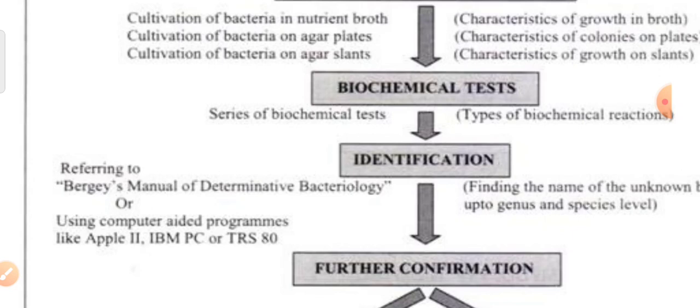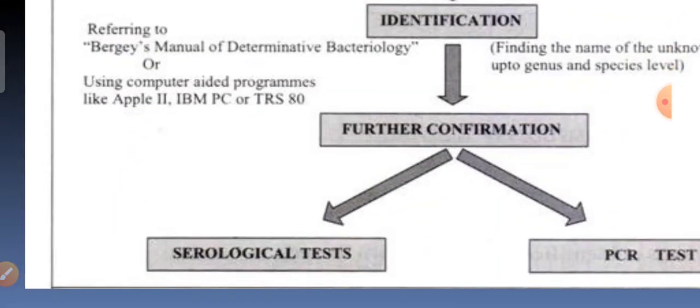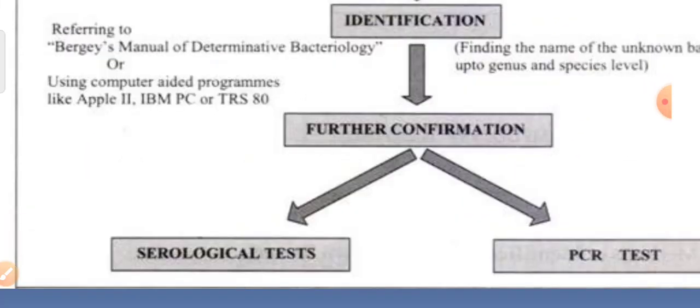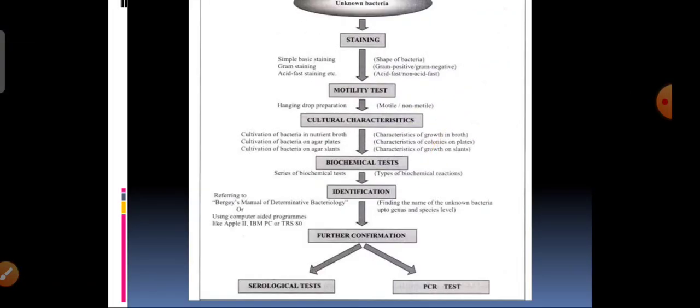After performing biochemical tests and getting the results of all these tests, the standard procedure is to refer Bergey's Manual and find out the organism. And if you further want to confirm, you can go for serological tests or PCR test to identify the unknown organism.